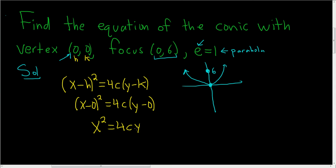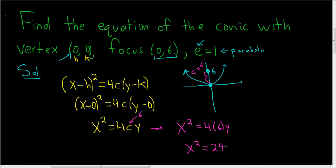The only thing left is to find c. From the picture, c is the distance from the vertex to the focus, so c = 6. Plugging in: x² = 4 × 6 × y, which gives us x² = 24y.